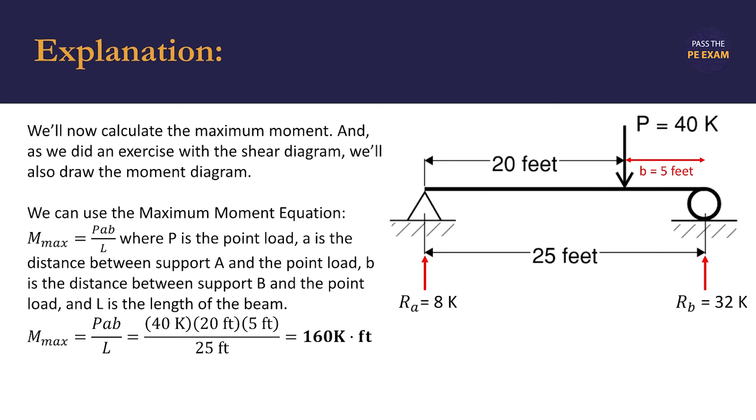Similarly, we do the same for the reaction force at B (32 kips), which is 5 feet away from the point load. This also gives 160 kip-feet, so our check confirms everything is correct.